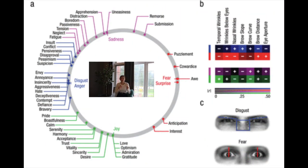They then clustered these emotional states and found four distinct clusters: sadness; disgust and anger; fear and surprise; and joy. Even when participants got things wrong, they were falling within the correct cluster — for example, submission and uneasiness fell into sadness, and annoyance and aggressiveness fell into disgust and anger. So emotions were clustering properly even though participants were only looking at the eyes.